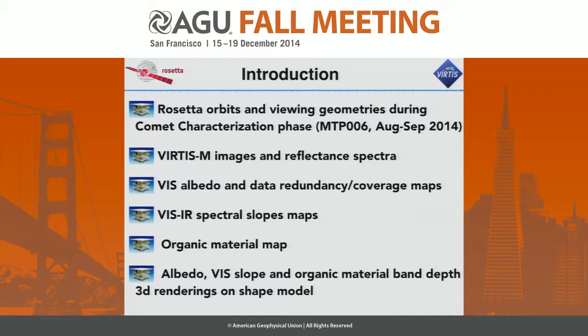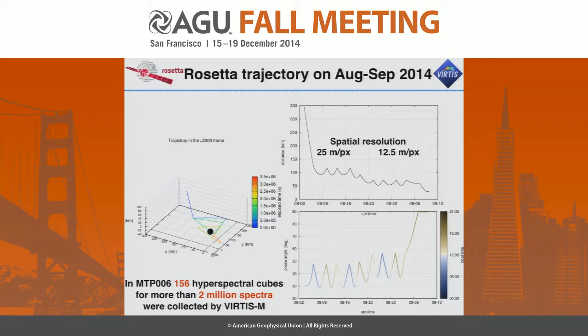Then I will describe briefly typical VIRTIS-M images and the reflectance spectra, showing on these spectra which kind of spectral indicators we have selected to map the composition and variability on the surface of the comet nucleus. And then we show for these spectral indicators — in particular the visible albedo, the infrared spectral slopes, and the organic material band depth — the distribution on the surface of the nucleus.